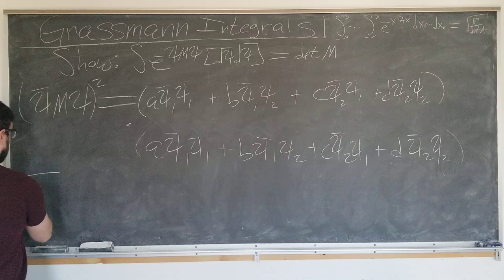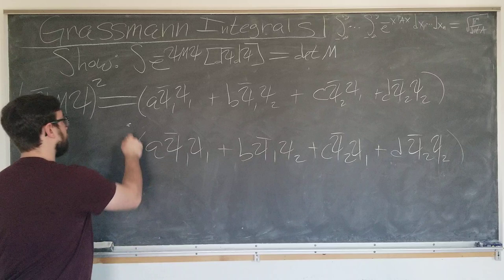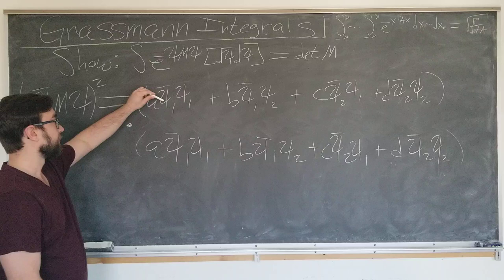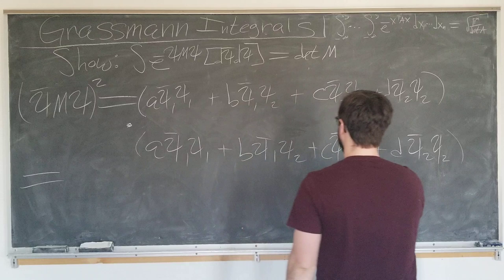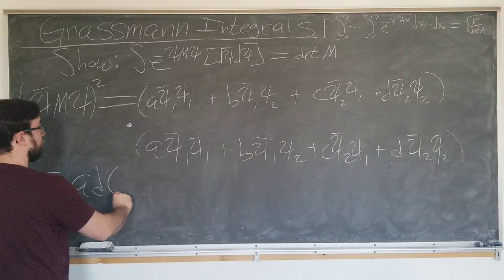This is A psi one bar psi one plus B psi one bar psi two plus C psi two bar psi one plus D psi two bar psi two. We're going to multiply these together. And we're not going to write out every term. That would be a mess. Instead, we can just think about this logically, rationally, and see what would be zero here. Well, if we just multiply the two A terms together, there will be two psi one bars and two psi ones. It's bad. Both zero. A times B, well, they would have two psi one bars. A with C, they'd have two psi ones. Last remaining term is A with D, which is non-zero.